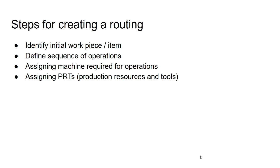When you want to create a routing, you first have to identify the initial work piece or the initial item, which represents your starting point in the routing. From that point you define a sequence of operations, assign machines to the respective operations, as well as assign the production resources and tools. That roughly is the workflow for creating a routing in SAP for production planning.